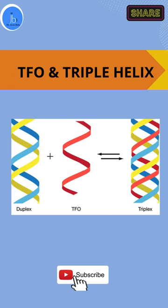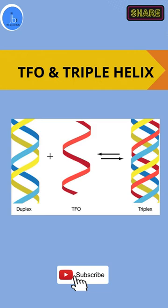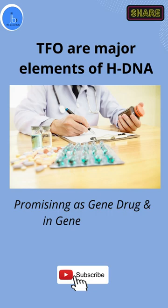Intermolecular triplexes are formed between the triplex-forming oligonucleotide (TFO) and the target sequences on the duplex DNA. TFOs are the major element of H-DNA and are promising as gene drugs and also in gene therapy.